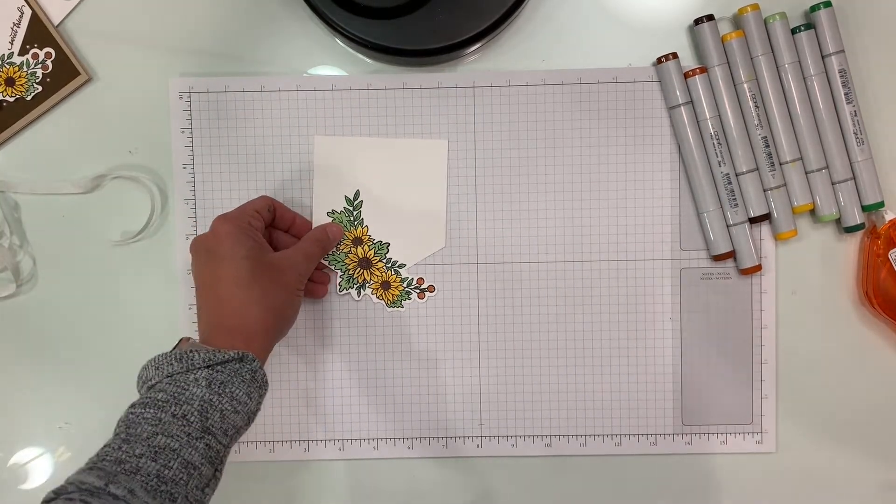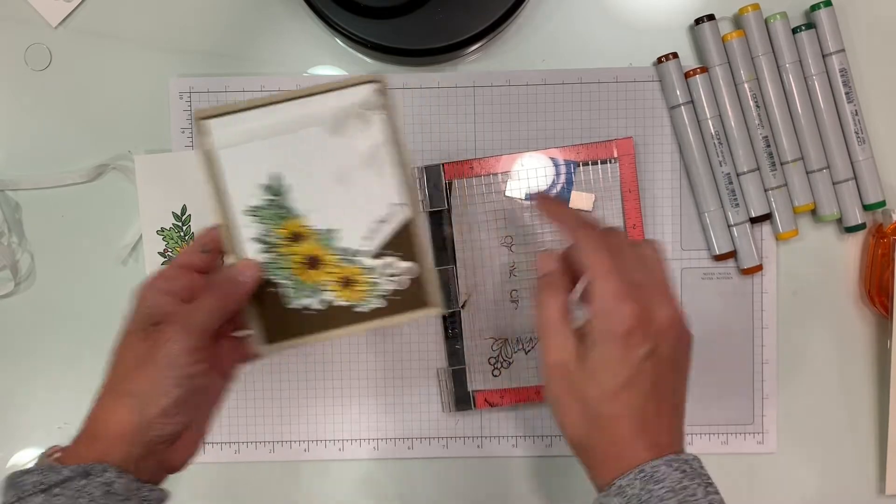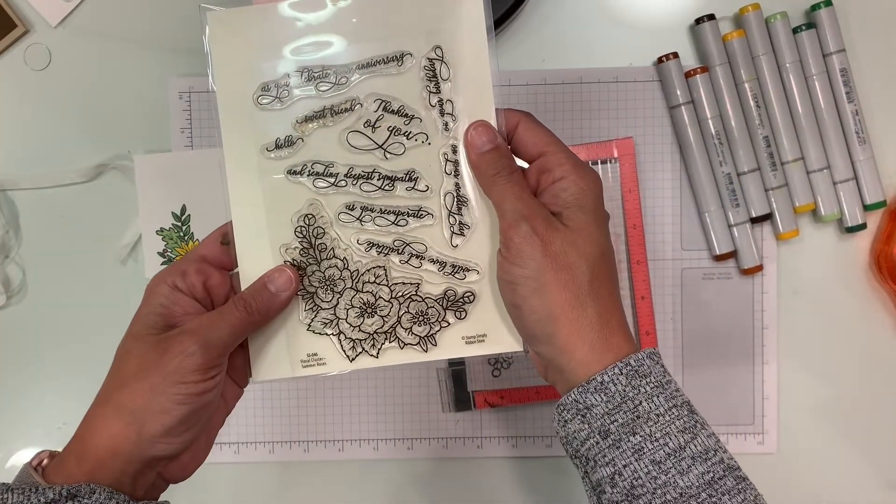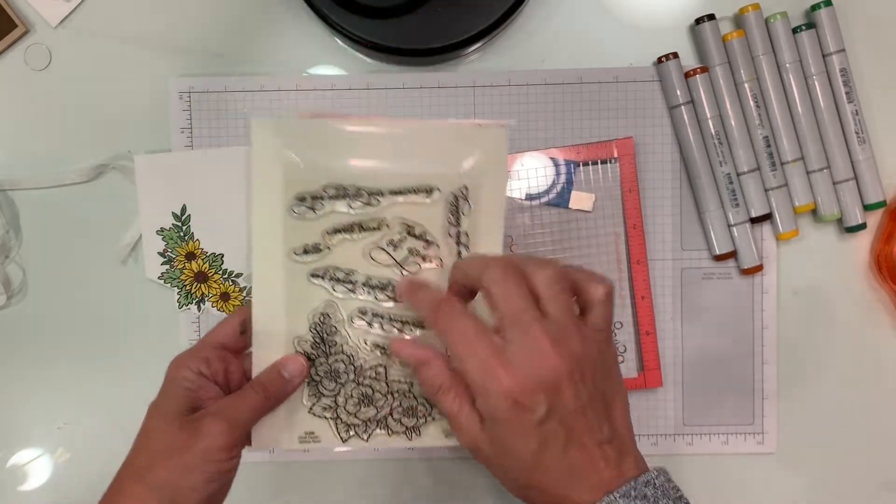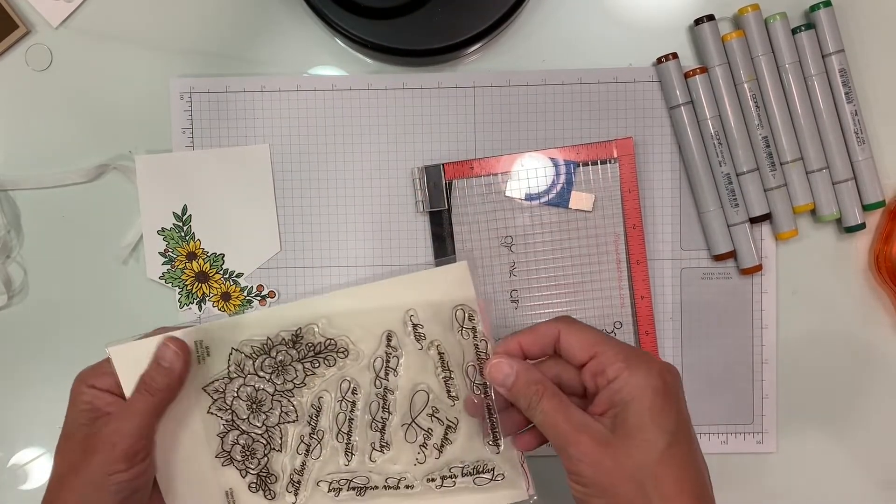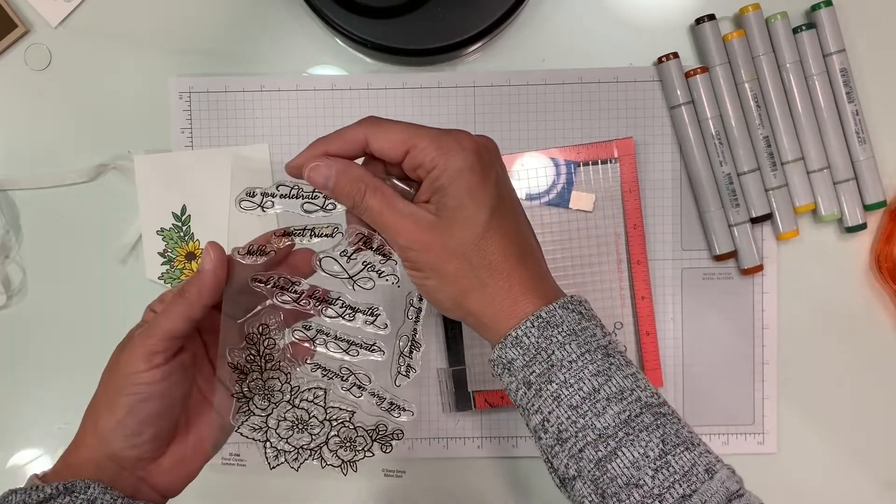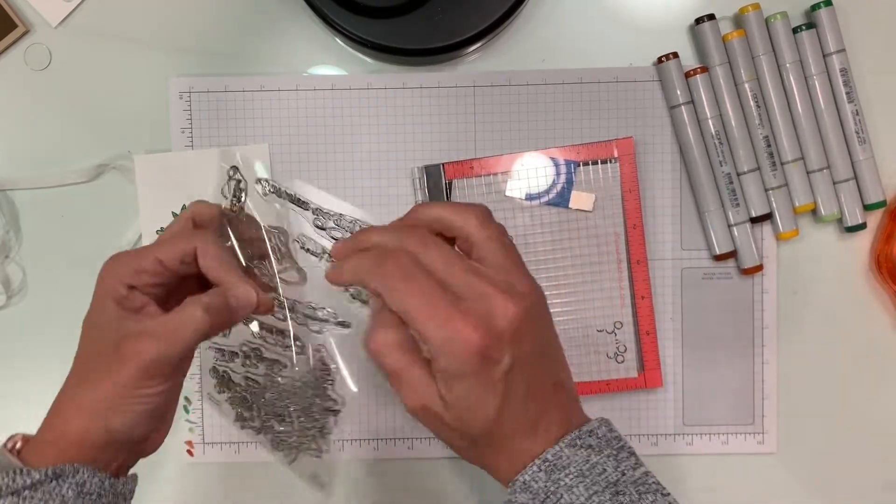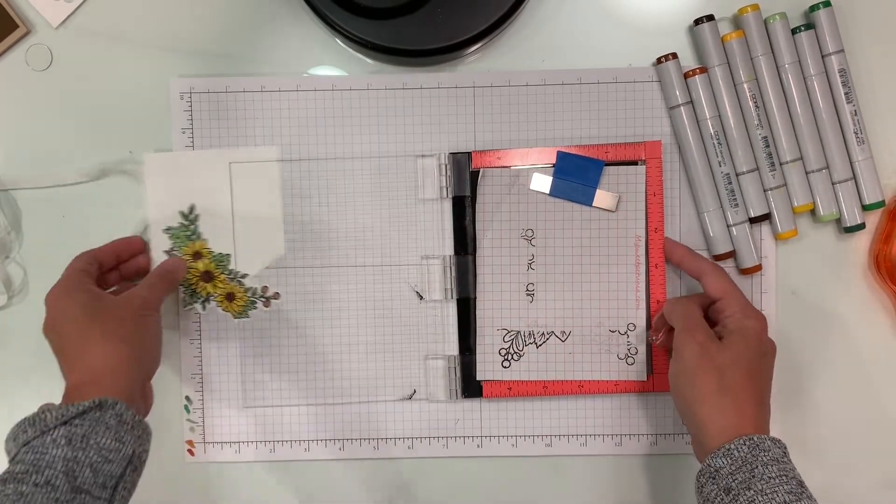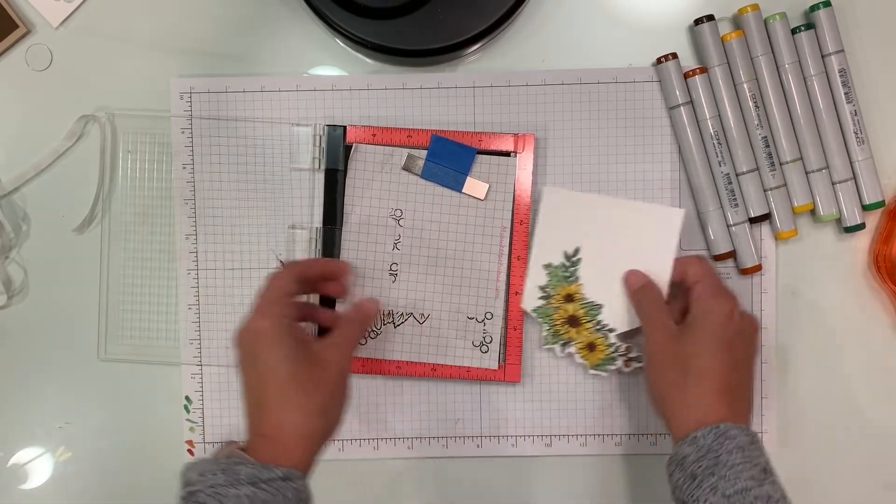So we are ready to go ahead and stamp that image. I used Sweet Friend for this card and that Sweet Friend sentiment is part of the Summer Roses stamp set. This floral cluster has four stamp sets and a coordinating die that works with all of the sets. So I'm just going to go ahead and pull out that Sweet Friend and put it here. This is where your stamp positioner comes in handy.